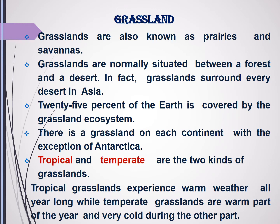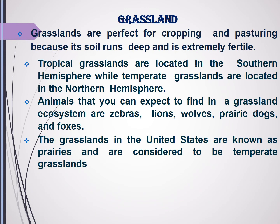Next is grassland. Grasslands are known as prairies or savannas and are normally situated between the forest and the desert. All the deserts in Asia are surrounded by grasslands. About 25% of the earth's land surface is covered by the grassland ecosystem, and grassland is present on every continent except Antarctica. There are two kinds of grassland: tropical and temperate. Tropical grasslands experience warm weather all year long, while temperate grasslands are warm part of the year and very cold during the other part. Grasslands are perfect for cropping and pasturing because the soil is deep and extremely fertile. Tropical grasslands are located in the southern hemisphere, while temperate grasslands are found in the northern hemisphere.